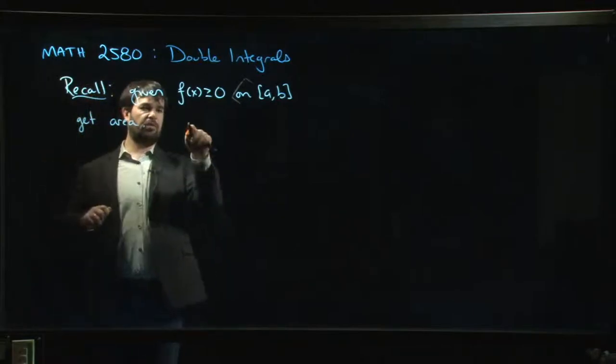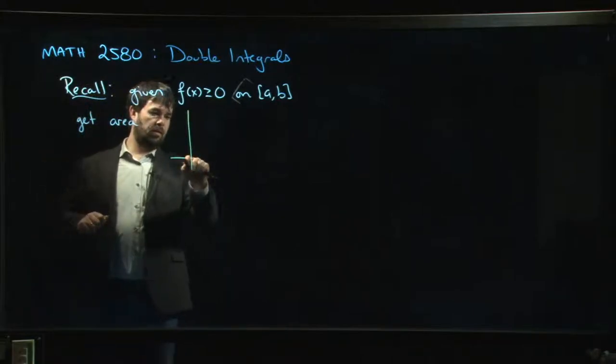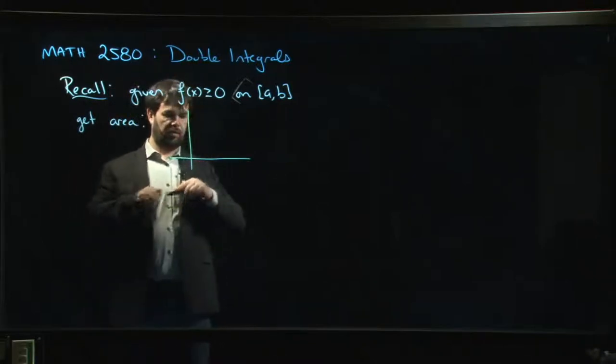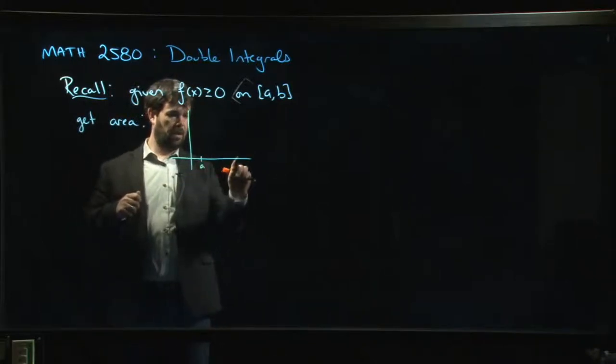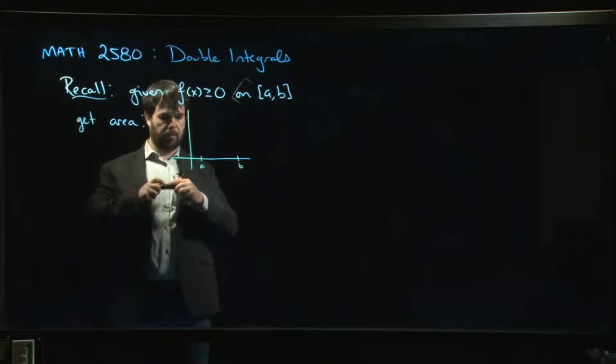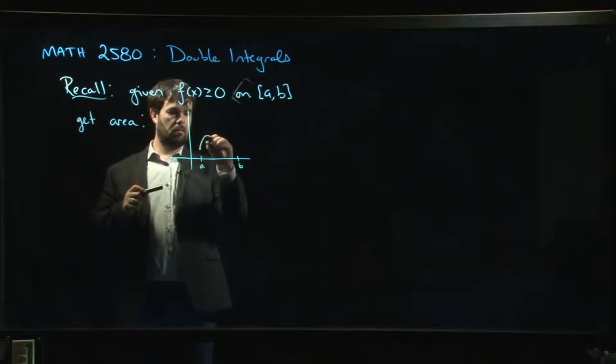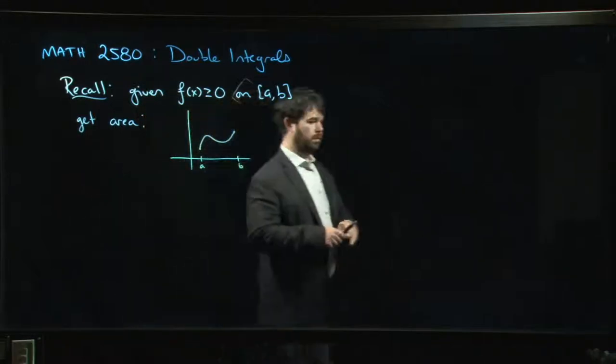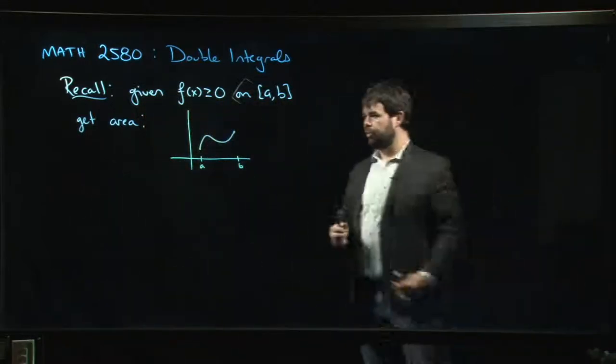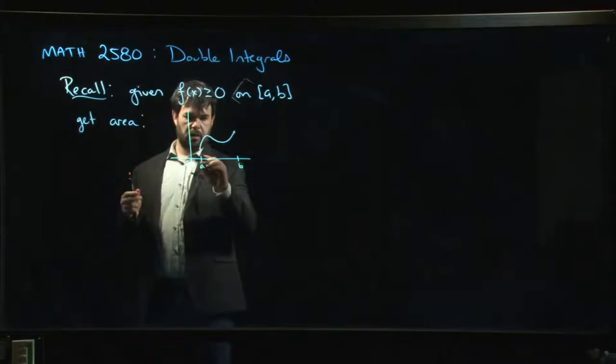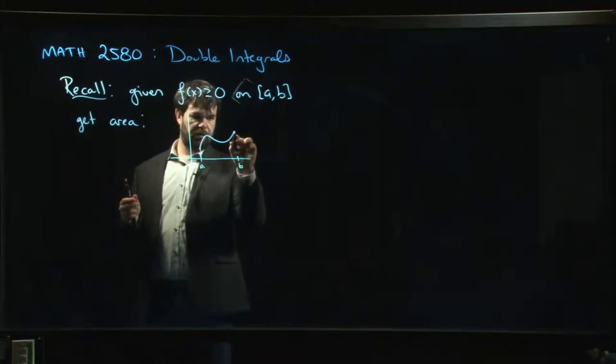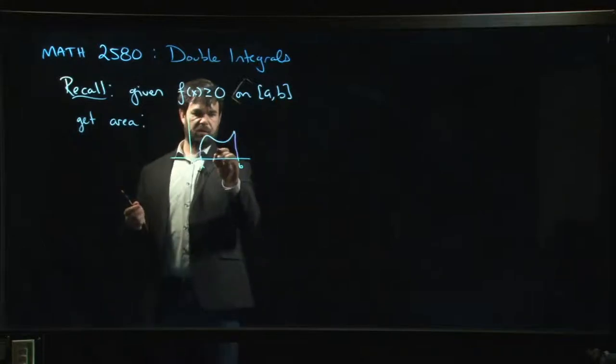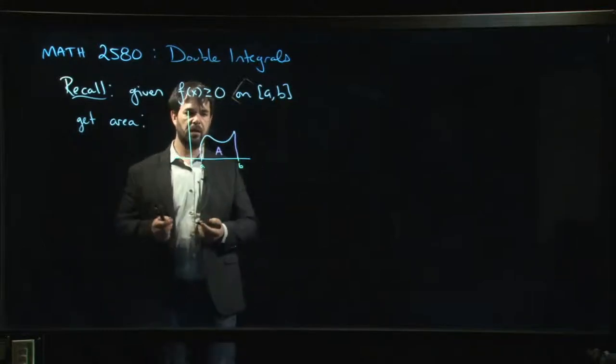So the picture, we know what the picture looks like. Something like this, we draw our coordinate axes, we have our a, b, got the graph of our function, and we have this notion of area because we can draw this in, right? This area under the curve between a and b, so this region here.